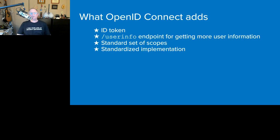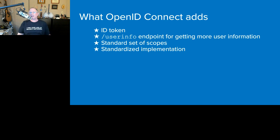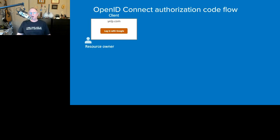OpenID Connect is for authentication and concerns of identity, riding on top of OAuth 2. It adds a new token called an ID token, a standard endpoint called the UserInfo endpoint to get additional information about the authenticated user, and a standard set of scopes — like profile, email, address, phone — that are predefined and every implementation including Okta must support. It still supports custom scopes for flexibility, but now we have a much higher degree of interoperability.